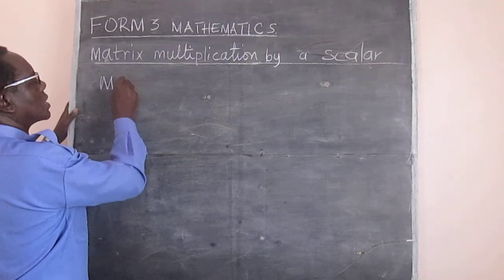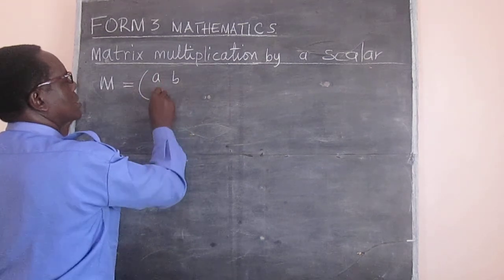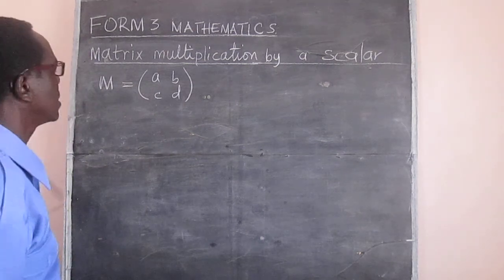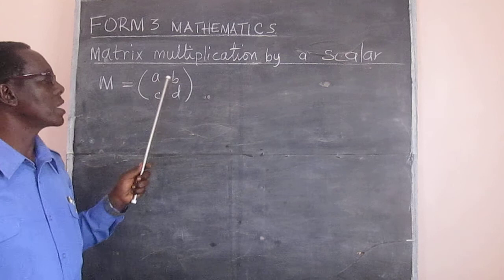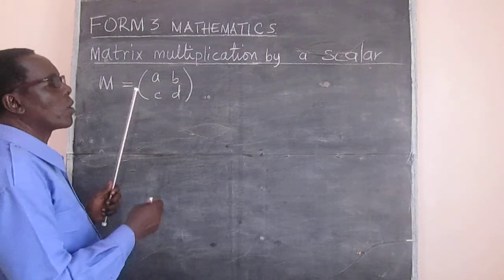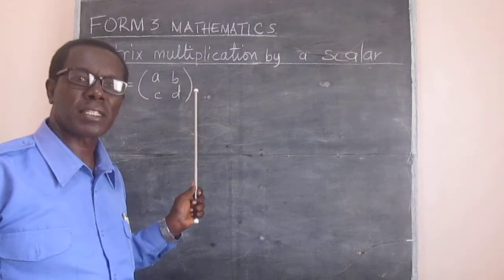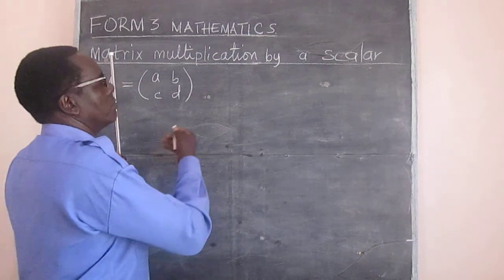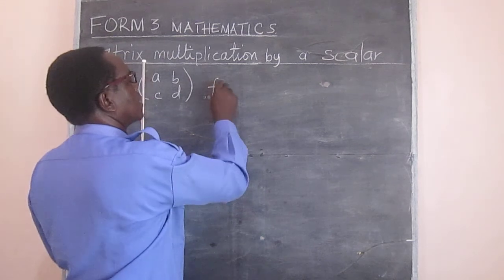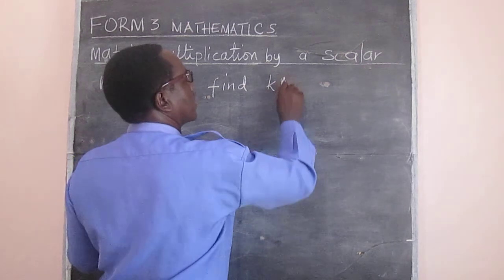This matrix M is equal to elements A, B, C, D. We want to show what we get when we multiply this matrix by a scalar. So what will be KM? Find a constant K multiplied by the matrix.